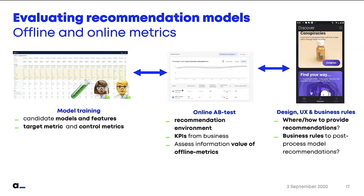For the success of a recommendation model, there are other components that are equally important. One is how do you show this recommendation — the design, the user experience. Do you want to show this recommendation as a section in your app, or sent via a push notification? Another point is business rules: the sequence model would, for every user, spit out a ranked list of all items. But you might want to post-process this list — for instance, exclude certain items or apply freshness criteria on how recent a podcast should be to appear in a recommendation. There are lots of business rules to discuss with content experts to achieve good post-processing of the model output.